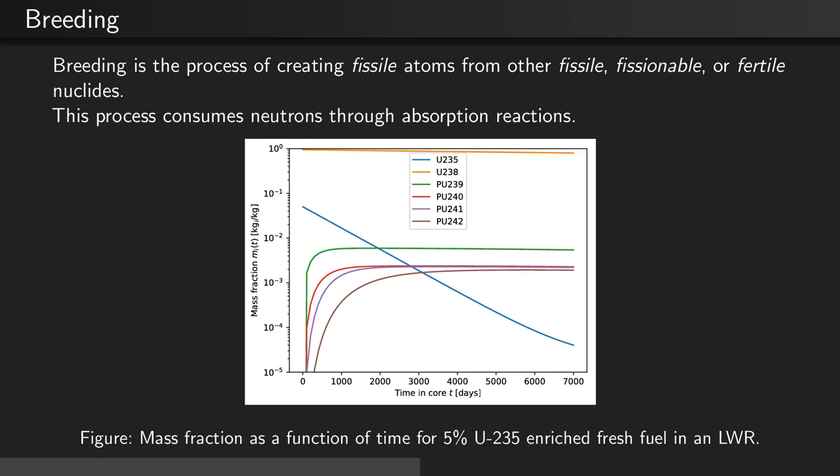The following figure shows a sample of fresh fuel for a light-water reactor. As you can see, the uranium-235 goes down by quite a bit, while plutonium isotopes are bred into the core. The uranium-238, while it does decrease in its concentration, does not do so nearly as dramatically as the 235.